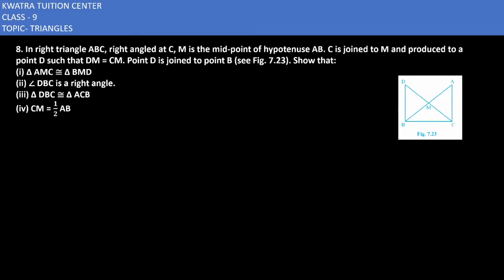Let's start with question number 8. Here it says in triangle ABC, right angle triangle ABC, right angle at C.